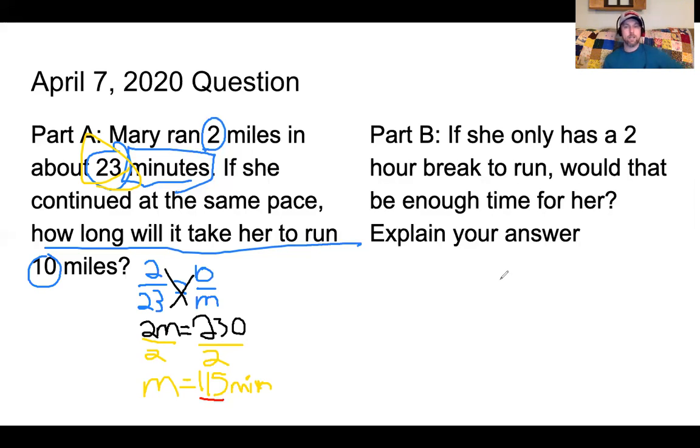Well, in order to figure out if she has enough time, you can either set up another proportion. So she has 2 hours. How many minutes are in an hour? That's something that I need to know. Well, I know that 1 hour has 60 minutes, so 2 times 60 is going to be how many minutes.